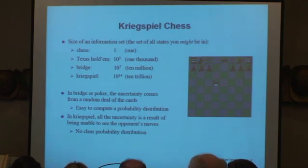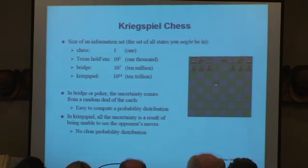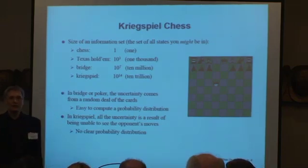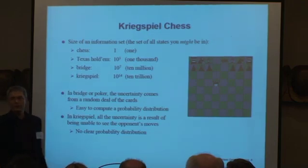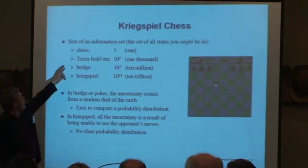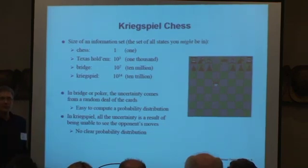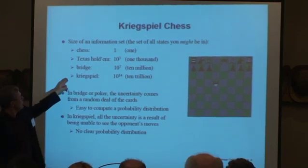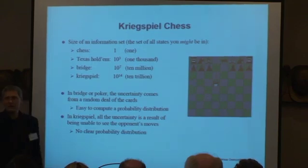The size of an information set — the set of all states you might be in during the game — here are some comparisons. In chess, it's one: you know exactly what state you're in. Texas Hold'em, the most popular version of poker, about 1,000. Bridge, around 10 million. Kriegspiel, around 10 trillion. So there's a lot of uncertainty about just what the state of the board is.